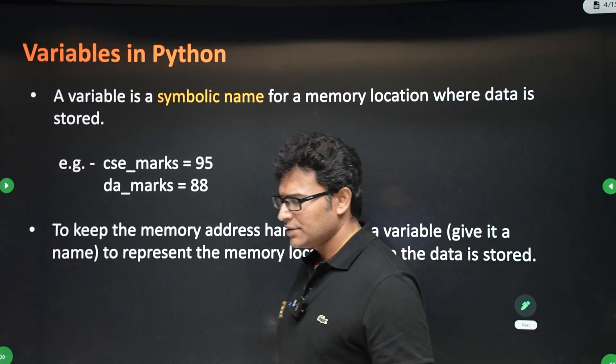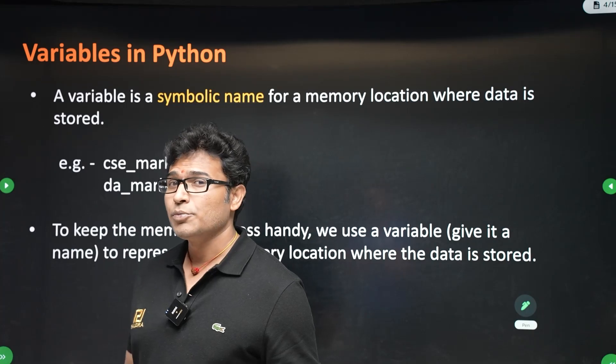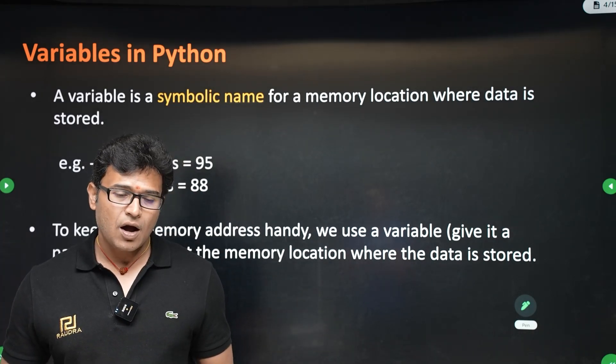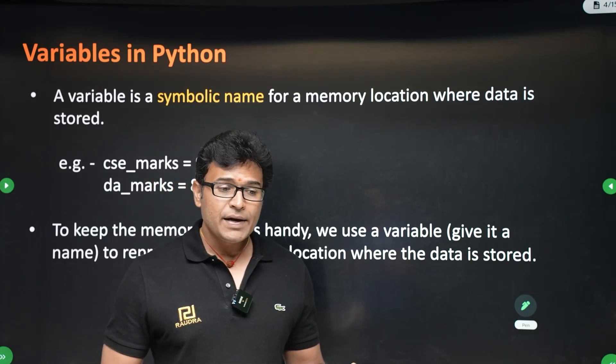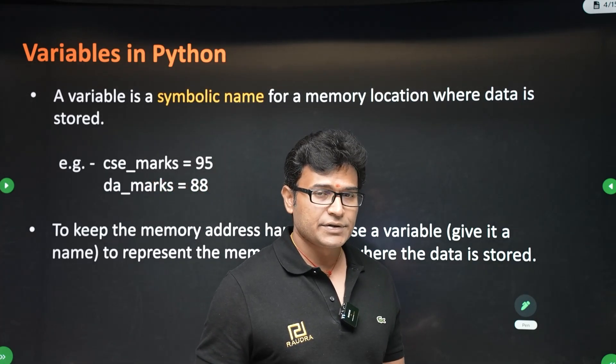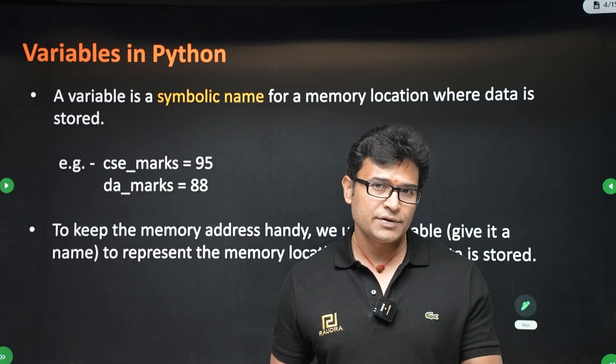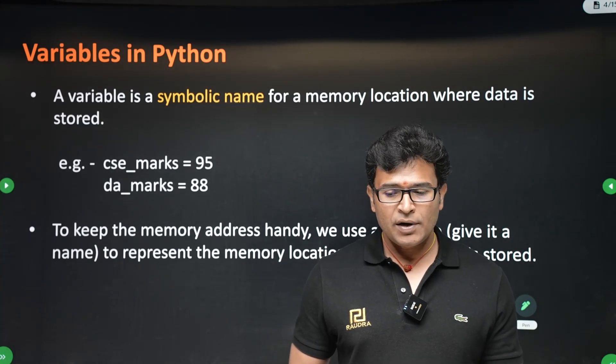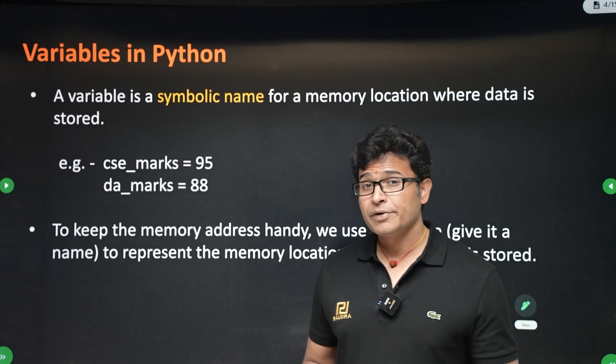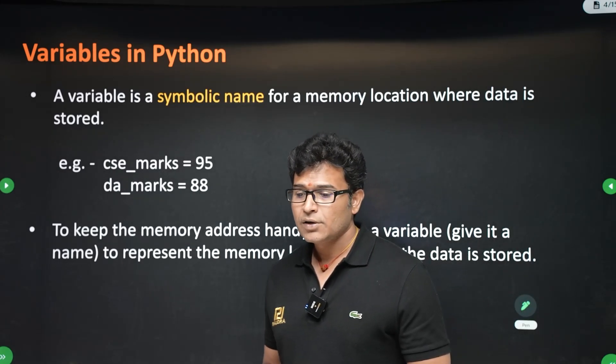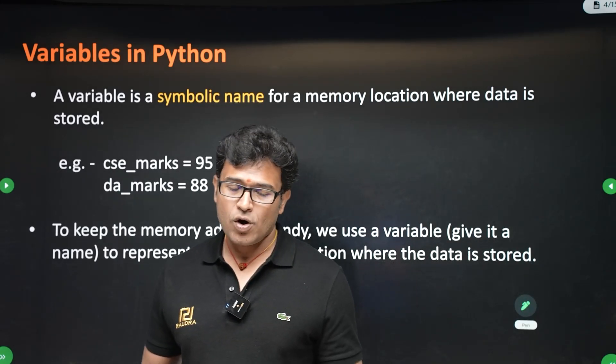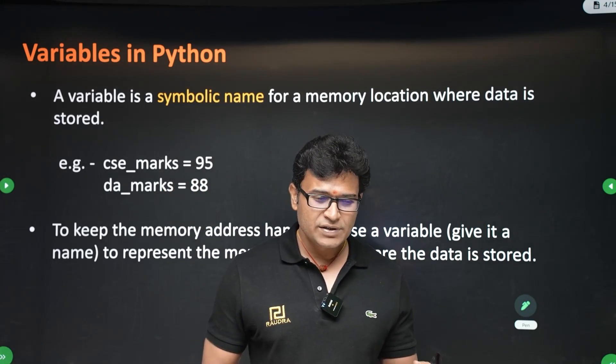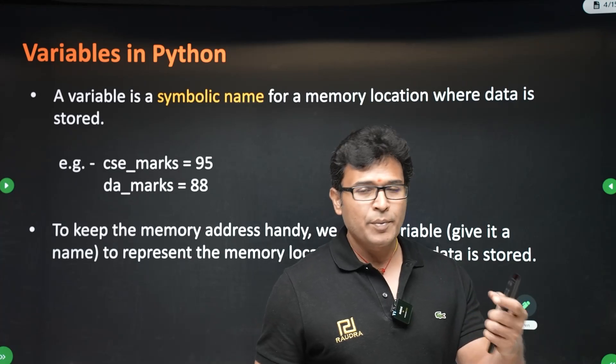Now let us see variables. What is a variable? Basically, when you want to store something in a computer, you are going to store it in the memory. How do you access it? By having the memory address, by holding the memory address. You can actually access that value in the memory address. But memory addresses are not human readable. It will be difficult to remember them. So what we use is a variable name, which is a synonym for the memory address.